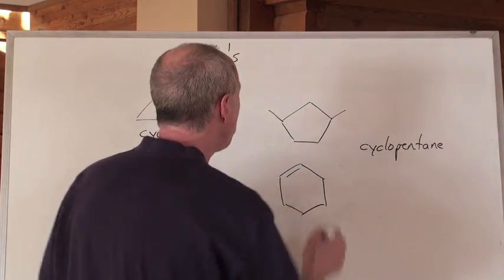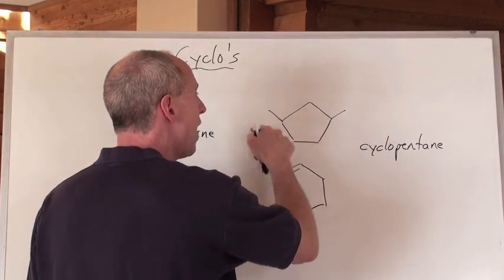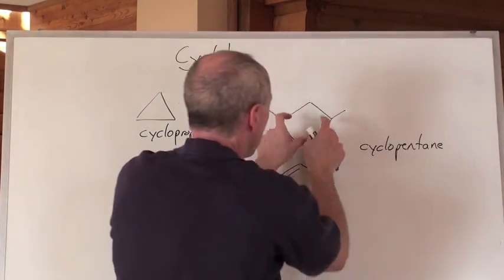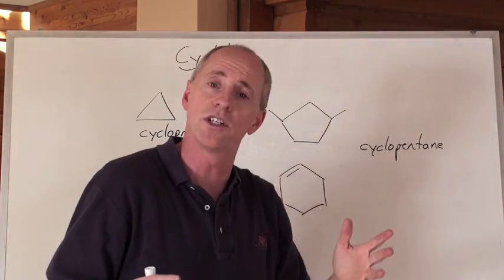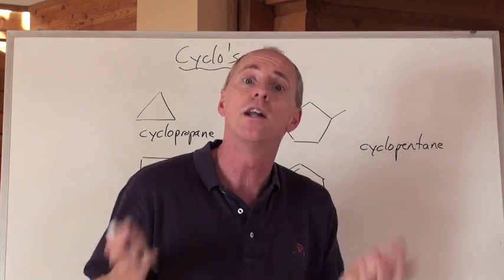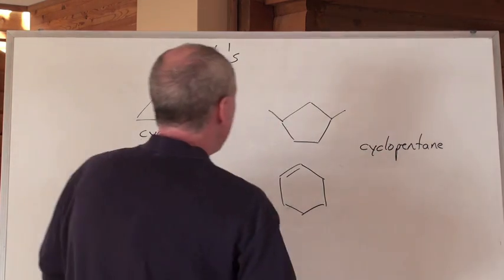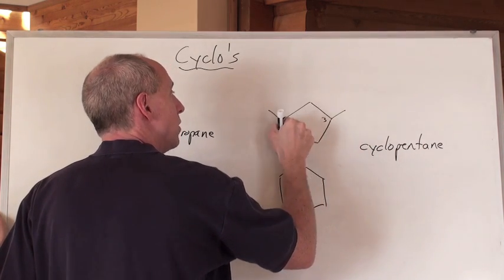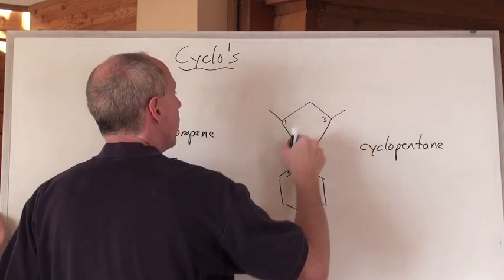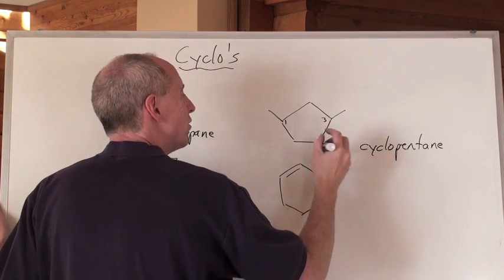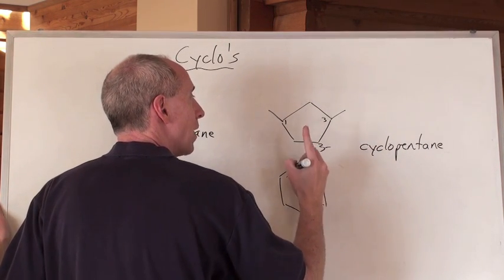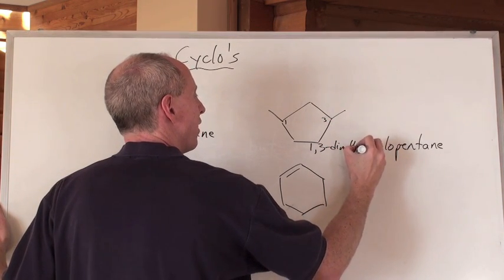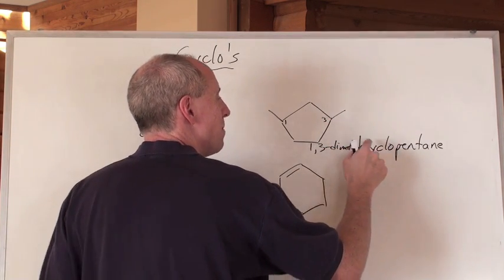Where are they coming off? If you keep turning this around, all the carbons in the ring are equivalent to each other — they all could be number one. So which one's number one? Lowest branch numbers possible. If I call this one, then that's two, then that's three. I wouldn't go the other way because that would give one and four. So it would be one comma three — two methyls coming off — one,3-dimethylcyclopentane.